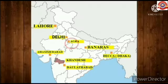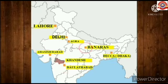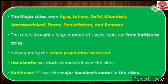The major cities were Agra, Lahore, Delhi, Khandesh, Ahmadabad, Dhaka, Daulatabad, and Banaras. The rulers brought a large number of slaves captured from battles to cities, and subsequently the urban population increased. Handicraft had much demand all over the cities, and karkhanas were the major handicraft centers in the cities.